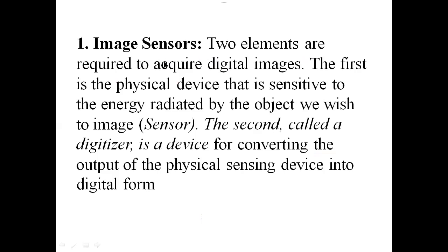Two elements are required to acquire digital images. The first is a physical device that is sensitive to the energy radiated by the object we wish to image. The second is called a digitizer — a device for converting the output of the physical sensing device to digital form. If the sensor captures an analog image, we need an analog to digital converter.